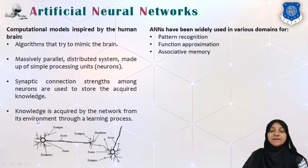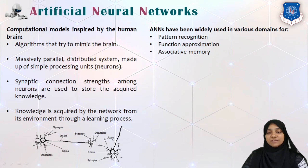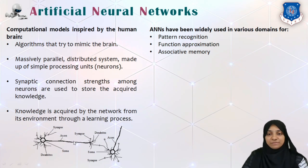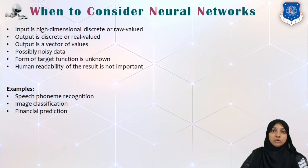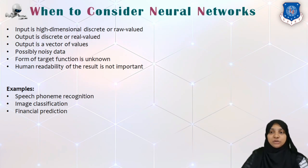Here is the basic diagram of a human brain where we have dendrites, synapses, and axons, with nerves connecting these synapses. These synapses are nothing but a basic neuron or a single processing unit. We are going to replicate this functioning of the human brain into a computer program, which is nothing but our artificial neural network.